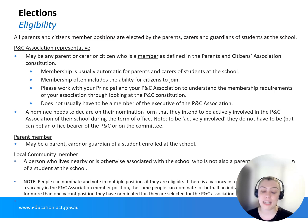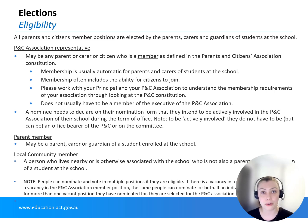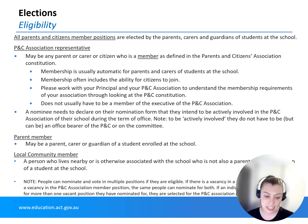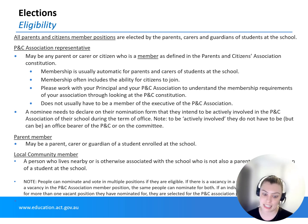For schools without a Parents and Citizens Association, there are two members from parents, guardians and carers of the school, and one member from the local community of the school. The local community position is to be filled by someone who lives in the local area or is otherwise connected to the school, but who is not a parent, guardian or carer for a student at the school. If no local community member can be selected — for example, no nominations are received — then up to three parent members can be selected.